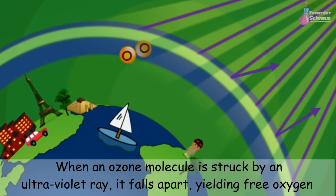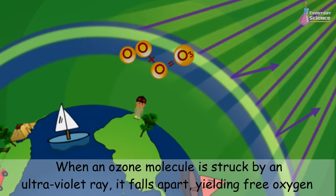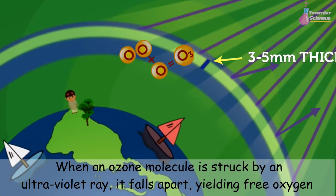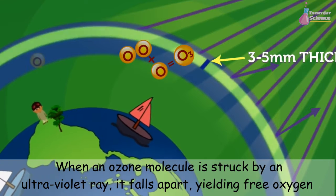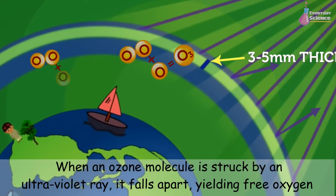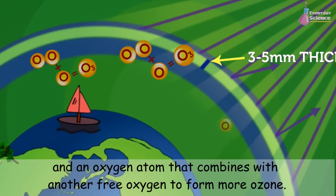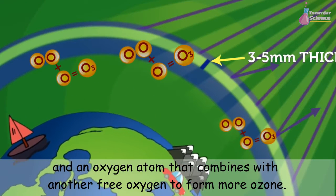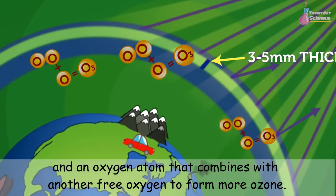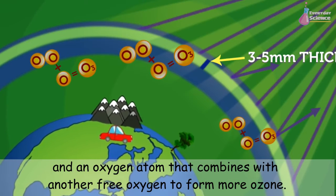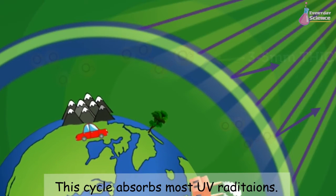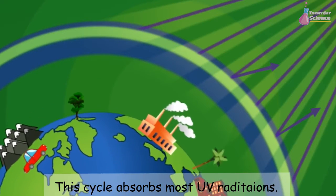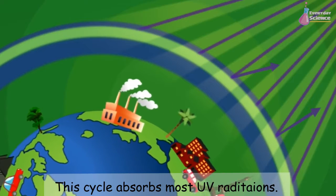When an ozone molecule is struck by an ultraviolet ray, it falls apart, yielding free oxygen and an oxygen atom that combines with another free oxygen to form more ozone. This cycle absorbs most UV radiations.